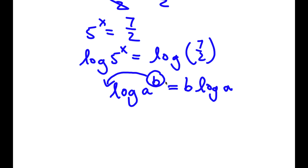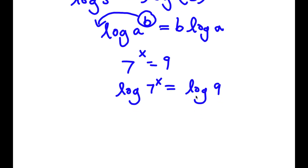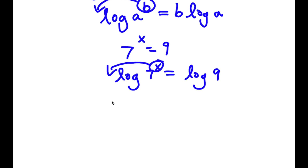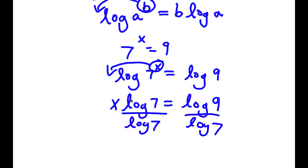The reason this property is so important — let's say we have 7 to the power of x is equal to 9. I'll first take the log on both sides: log 7 to the power of x is equal to log 9. Then I can move x to the front using this property, so x times log 7 is equal to log 9. Then I divide both sides by log 7 to find the value of x, because now x isn't an exponent — it's a real number.